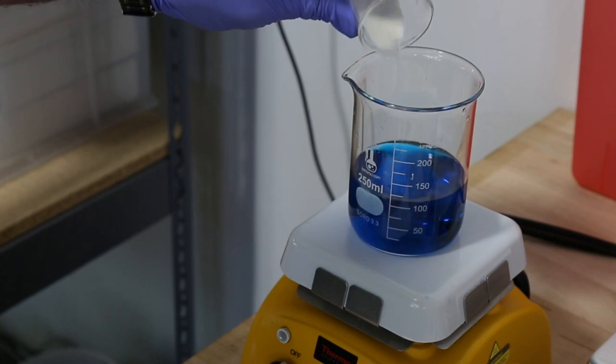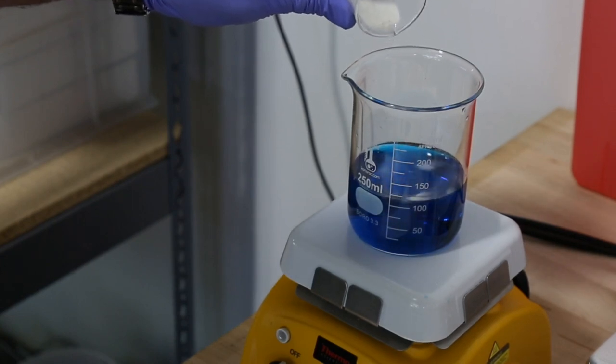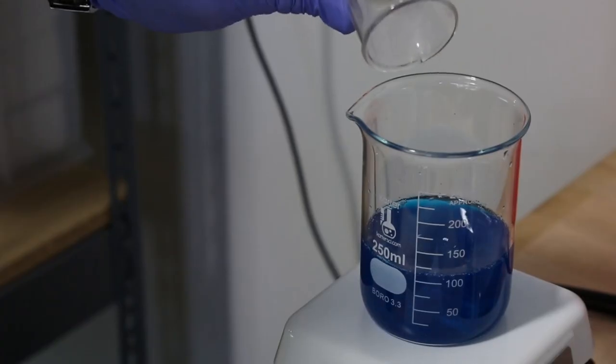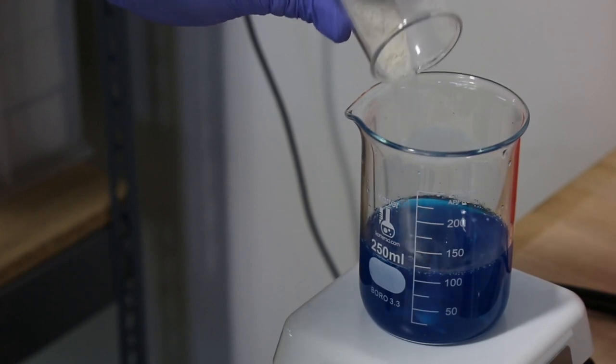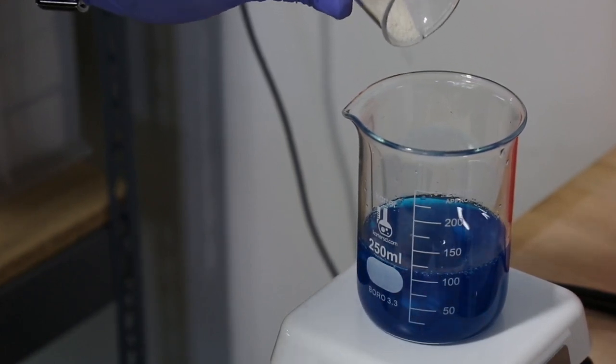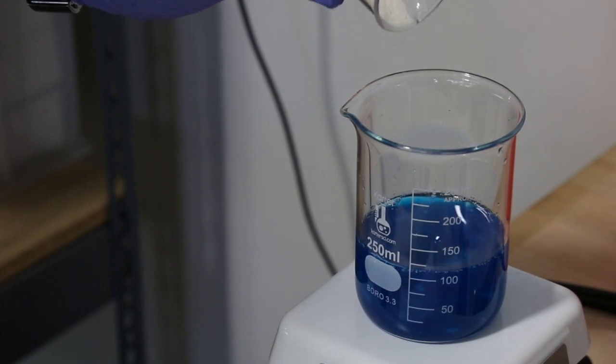And then we're gonna slowly add our 2 grams of sodium alginate powder. Because the sodium alginate wants to clump together, we're gonna have to slowly add it and mix it for a few hours so that it reaches a consistent viscosity.